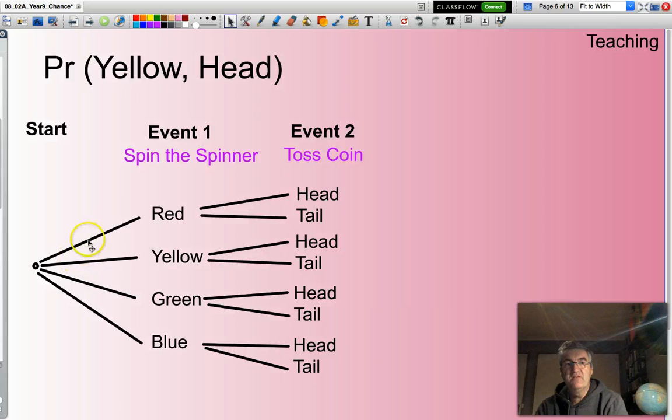So you could say these lines here are all the branches in my tree diagram. I list my events and I look at all the combinations for all the branches.